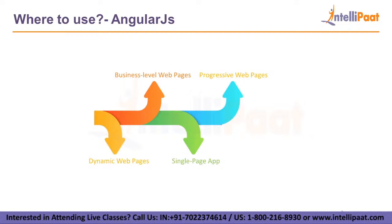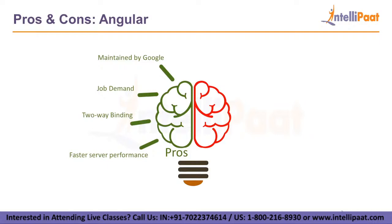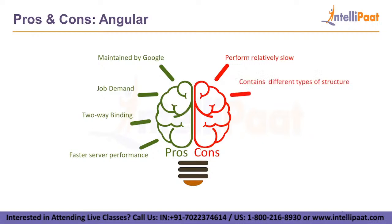Pros and cons of AngularJS. First pro: maintained by Google — it is endorsed and maintained by Google with a large community of developers throughout the world. Second: job demand — Angular is a great tool to have on your CV because of its enormous popularity and demand. Third: two-way binding — any change in the document object model is reflected in the application and vice versa. Fourth: faster server performance — everything is written in a type-safe manner using TypeScript and the built-in framework is far faster than other native JS frameworks. Cons: performance is relatively slow, contains different types of structure, and harder to learn compared to other frameworks like React or Vue.